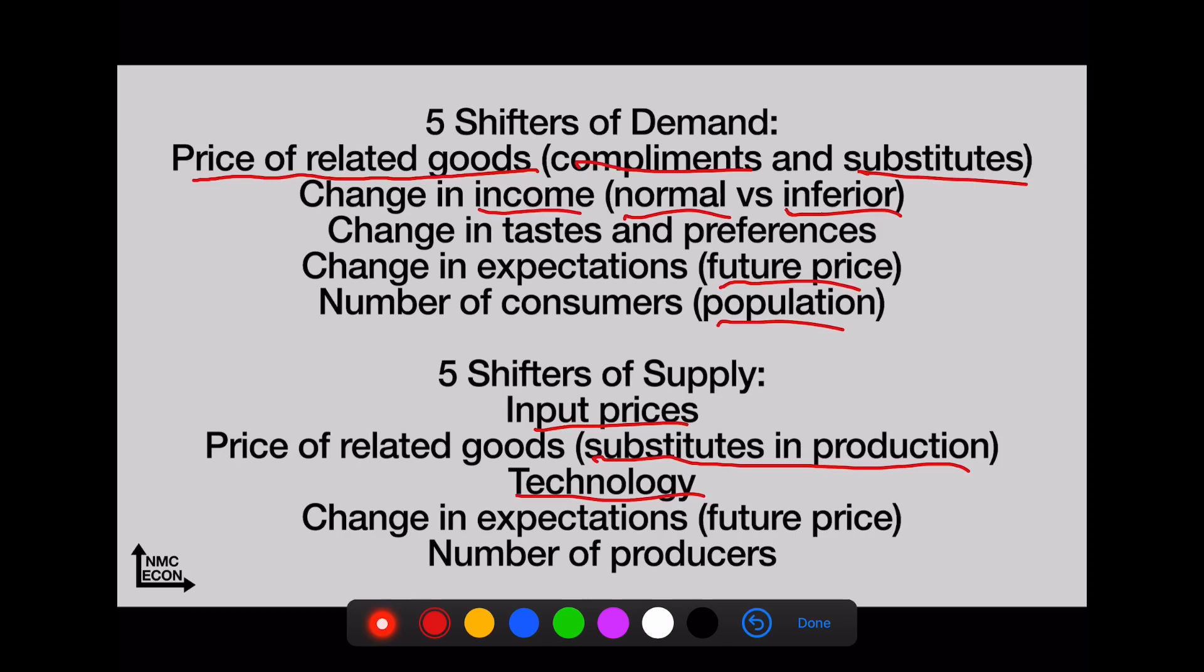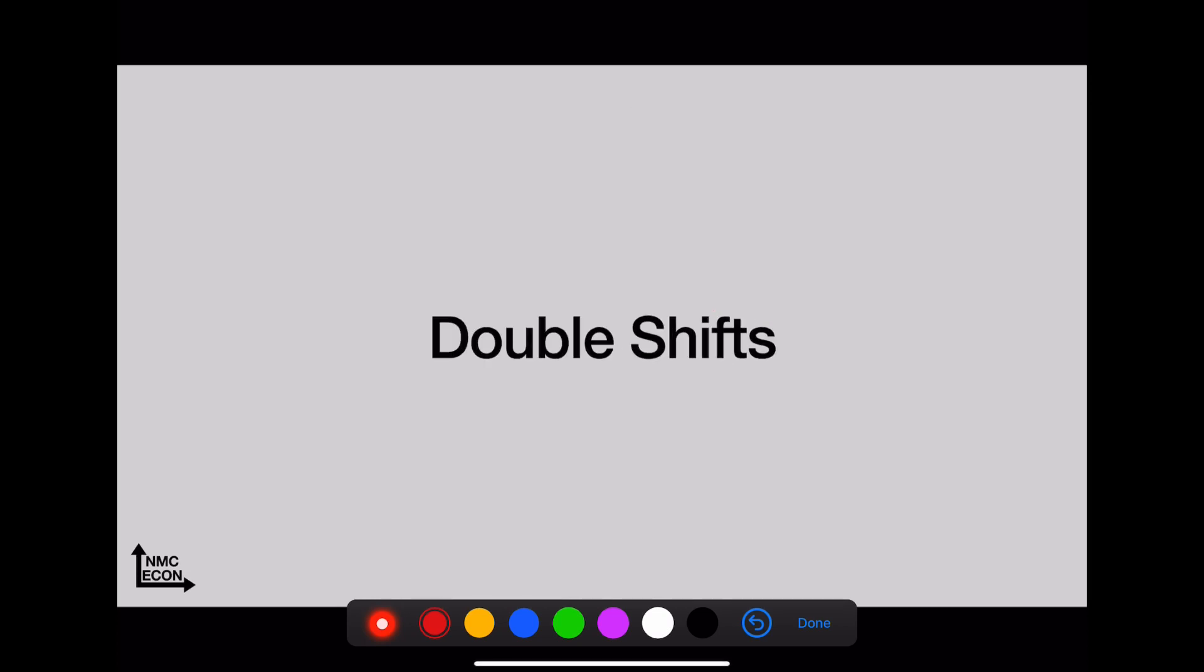Technology means you can make more of a good for the same cost as before. That's an outward shift of supply. Change in expectation—similar to above. If you think you can sell the good for more in the future, will you sell more or less today? Well, you're going to supply less today. You'll wait until the future, then you'll supply more. Number of producers—that's just more factories or firms opening up in your industry.